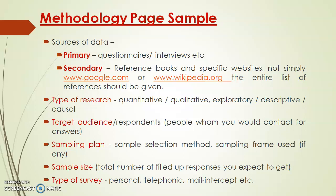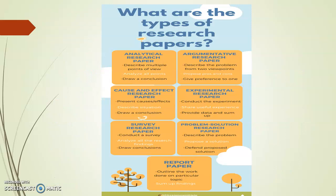For the sample methodology page, when you prepare the first 25 pages of data in Semester 7, it should include your primary questionnaires and interviews, secondary reference books and specific websites — not just www.google.com or www.wikipedia.com. The entire list of samples should be there, along with the type of research you are going to follow: quantitative, qualitative, exploratory, descriptive, or casual. Include your target audience, sampling plan or plan of work, sample size, and the type of survey — whether personal, telephonic, mail, or intercept. After completing Semester 7 work, consider whether you are able to publish a research paper — analytical, argumentative, cause and effect, experimental, survey, problem-solution, or a report paper.